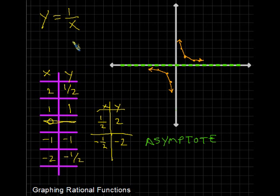It turns out that this function, y equals 1 over x, has what's known as a vertical and a horizontal asymptote.